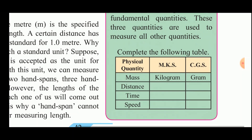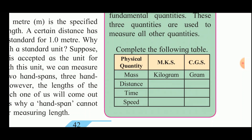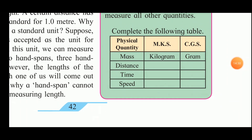A table can be completed as follows: mass is measured in kilograms in the MKS system and grams in the CGS system; distance is measured in meters in MKS and centimeters in CGS; time is seconds in both systems. Speed is given by the formula distance divided by time, so in the MKS system the unit is meters per second and in the CGS system it is centimeters per second.